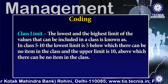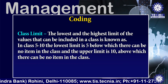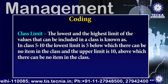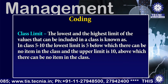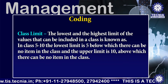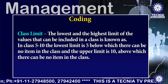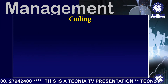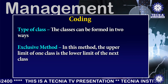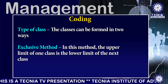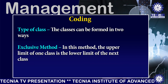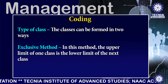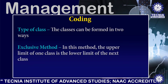There is another term: the class limit. The lowest and the highest limit of the values that can be included in a class is known as the class limit. In class 5 to 10, the lowest limit is 5, below which there can be no item, and 10 is the upper limit above which there can be no item in the class. The classes can be formed in two ways. The first is the exclusive method, in which the upper limit of one class is the lower limit of the next class.